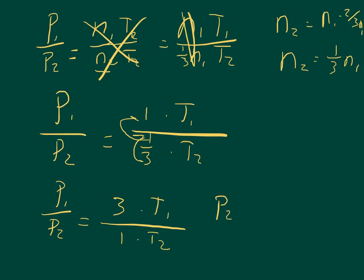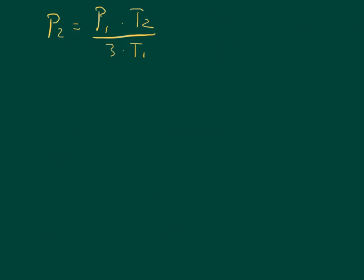So P2, the final pressure, is equal to P1, the initial pressure, times T2, the final temperature, over 3 times the initial temperature. So I can plug in my values. The one thing I have to be careful about is the temperature that it gave me was not in Kelvin, it was in Celsius. And so I kind of want to explain what happens, or why Celsius doesn't work.